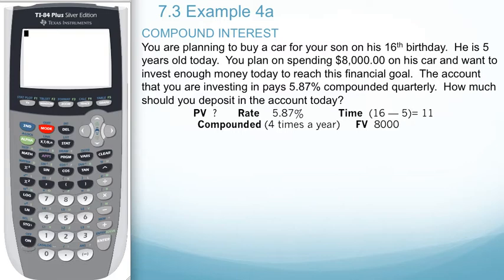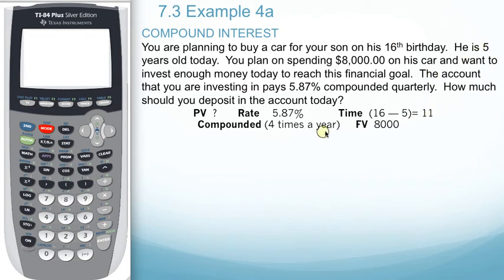The present value we don't know — we're going to determine that. The rate is 5.87%. The time in this case is 16 minus 5, which would be 11. It's compounding quarterly, which is four times a year. And the future value is going to be $8,000.